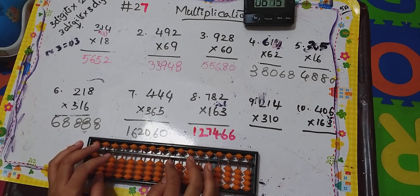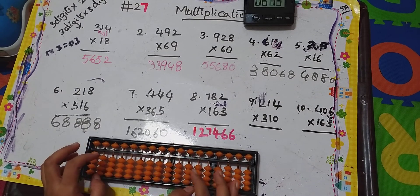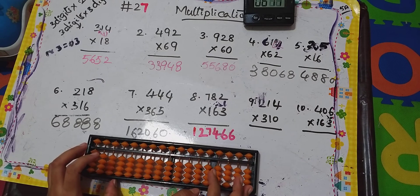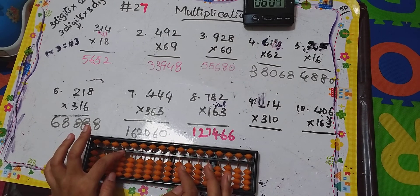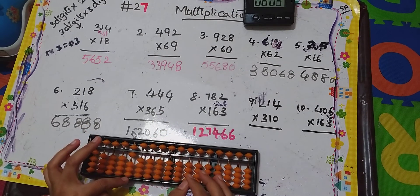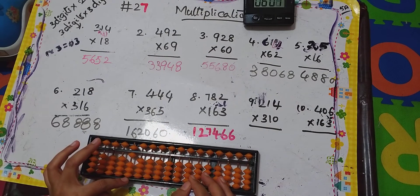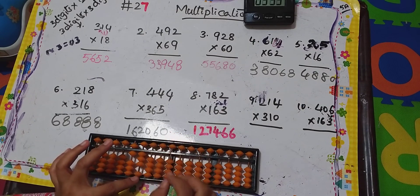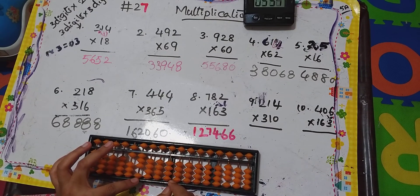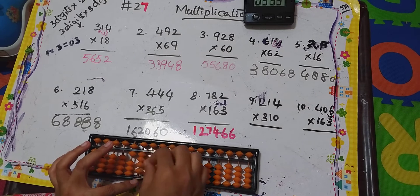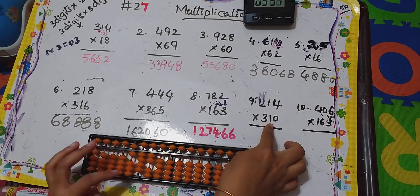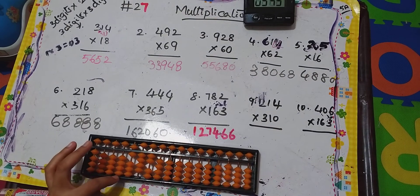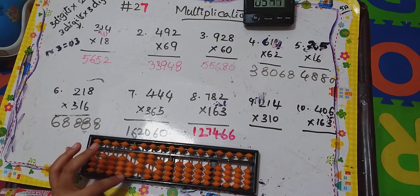227 times 310. We need again six columns. So: 3 twos are 06, next 3 ones are 03, next 3 fours are 12 — 1, 2, twelve done. So done with the 3. Then we go for 1.